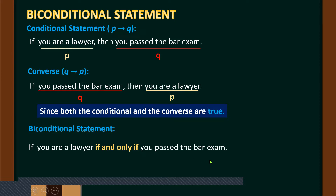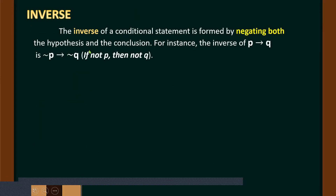For the inverse, the inverse of a conditional statement is formed by negating both the hypothesis and the conclusion. When we say negating, we add 'not,' 'do not,' or 'don't.' For instance, the inverse of P implies Q is not P implies not Q: 'If not P, then not Q.'